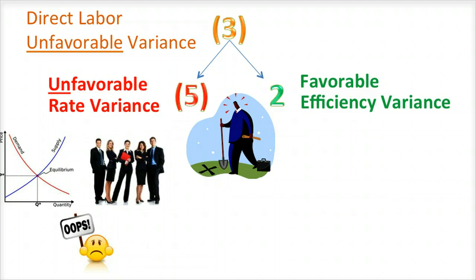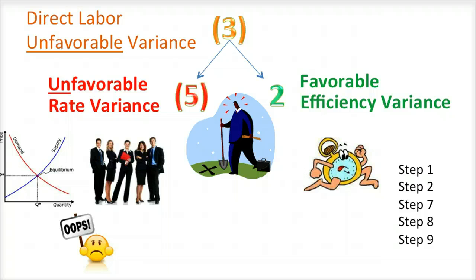Some likely causes of favorable efficiency variances could be quick workers, or workers who skipped steps in the production process.